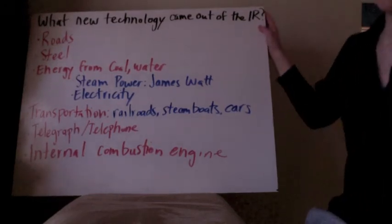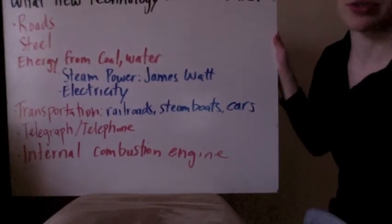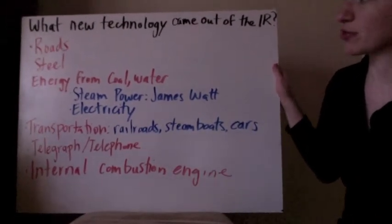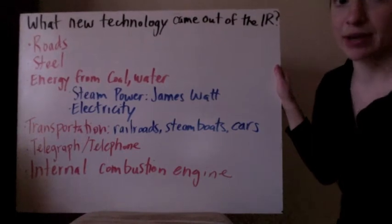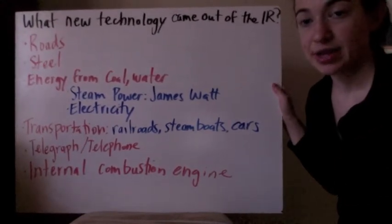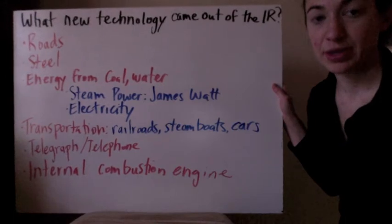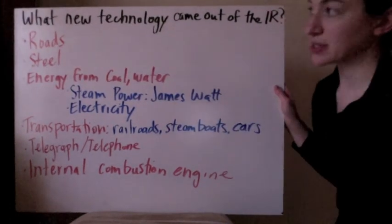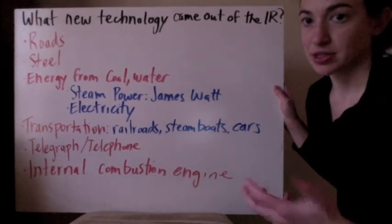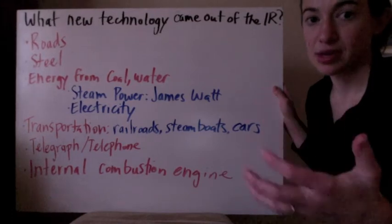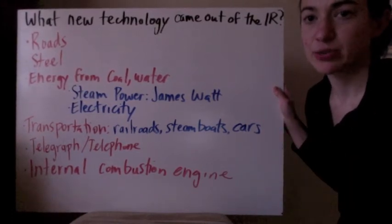The next thing that came out of the Industrial Revolution was new technologies. You can basically thank the Industrial Revolution for all the technology you have in your life, because it started with them and continued to grow. The first important development was roads — you need good roads to ship stuff from place to place, not just dirt or mud roads, but solid roads to deliver materials. Steel also became a lot more popular; as they built factories they needed stable structures, and machines were built with steel for a stronger, more stable build.